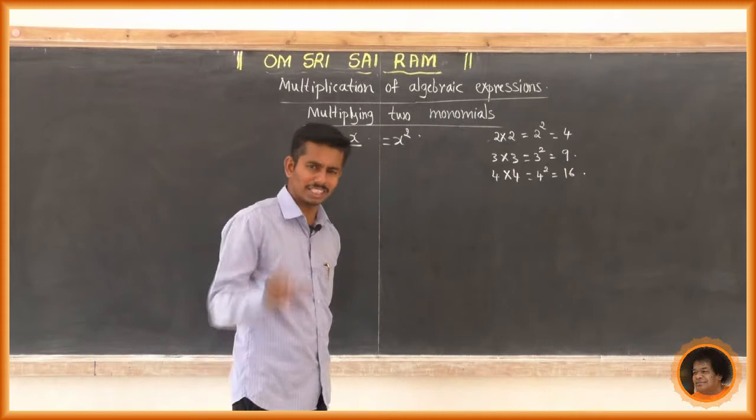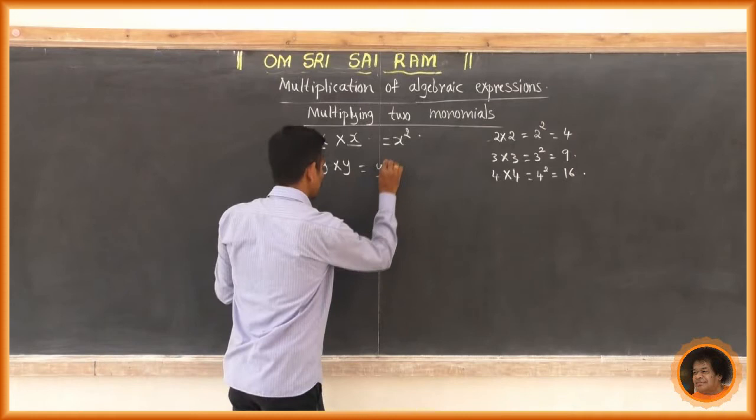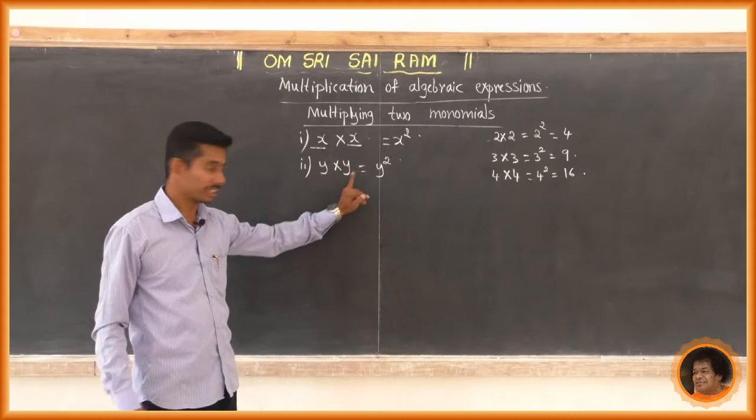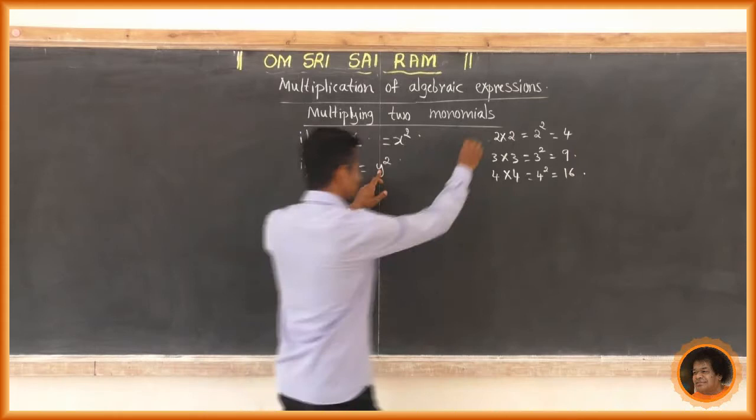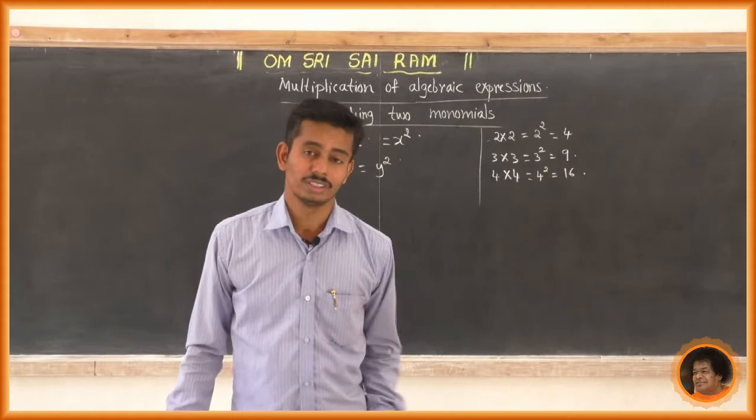What is the product of y into y? Y into y is y squared. Be careful — it is not 2y. If you add y and y, then it is 2y. If you multiply y into y, then we get y squared, because 2 into 2 is 2 squared, and similarly y into y is y squared. What is q into q? It is q squared. What is m into m? It is m squared.